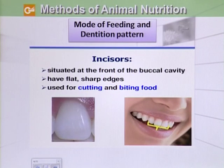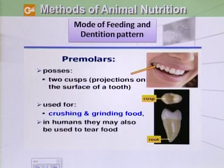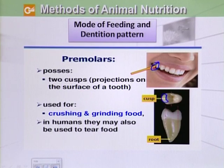Then we have the front teeth called incisors. They are flat with sharp edges and are used for cutting and biting food. Then we have premolars, which possess two cusps — cusps are the outward bridging projections. These are used for crushing and grinding food, and in humans they may also be used to tear food.